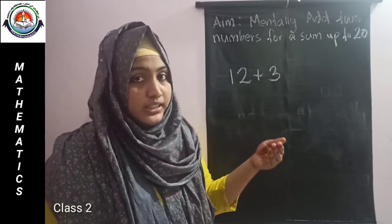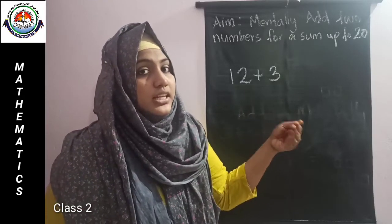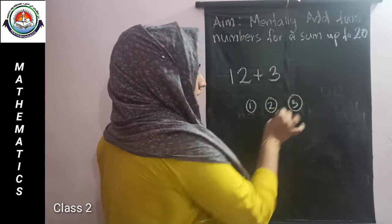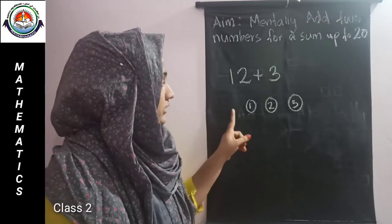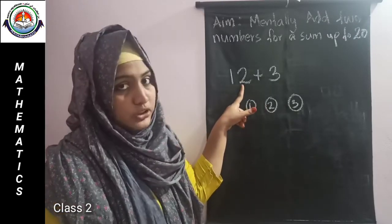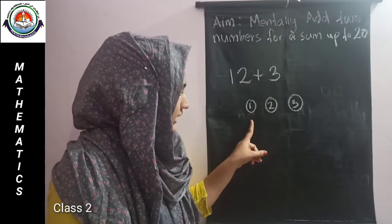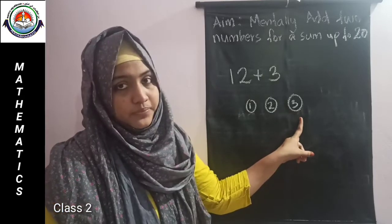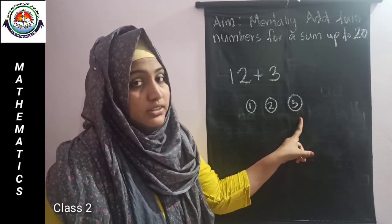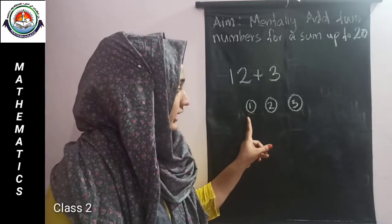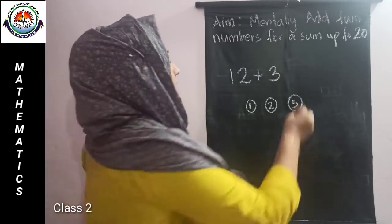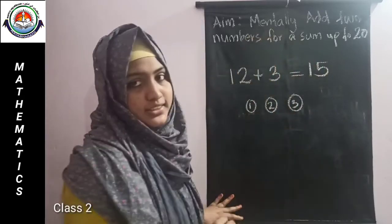Then count on in our mind by as many as the smaller number. The bigger number is 12, so think about 12. The smaller number is 3. We count on from 12 by 3: 13, 14, 15. The number that we count last is the sum. Which number did we count last? We got 15. So the sum is 15.